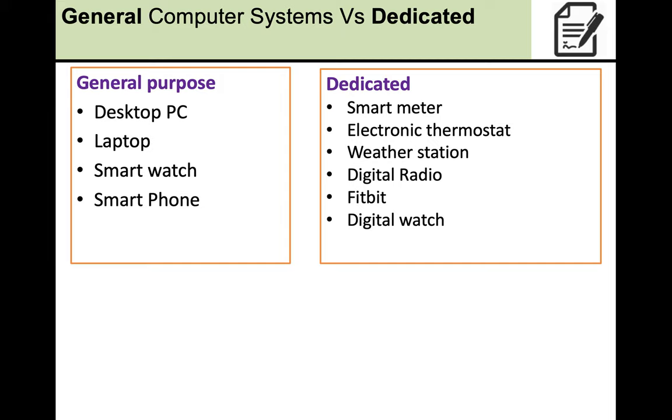But if we take a look at the dedicated side, we've got a smart meter. And even though we have the word smart in front of it, smart meter is still designed to monitor your electricity and your gas in your house. It does have one dedicated function. You can't make phone calls on your smart meter. The same with an electric thermostat, or potentially a weather station, a digital radio, or a Fitbit, which again, could be classed as a smart watch. But realistically, it is designed to track your fitness. And finally, a digital watch, which even though it's got things like an alarm clock and stopwatch, it's all dedicated to telling the time.